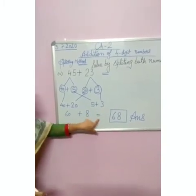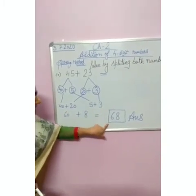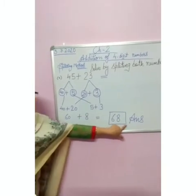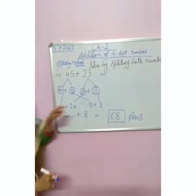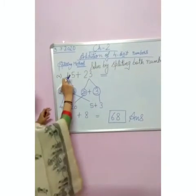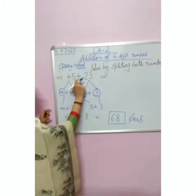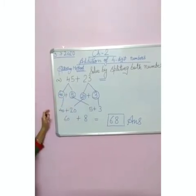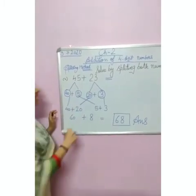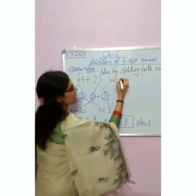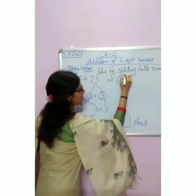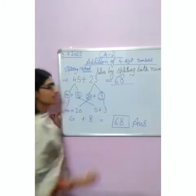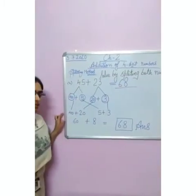Then we will add it all together: 60 plus 8. Our answer is 68. If we add 45 plus 23 directly without splitting the digits, then also our answer is 68. So you can verify your answer as well.